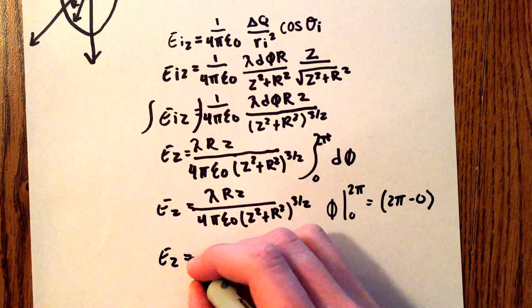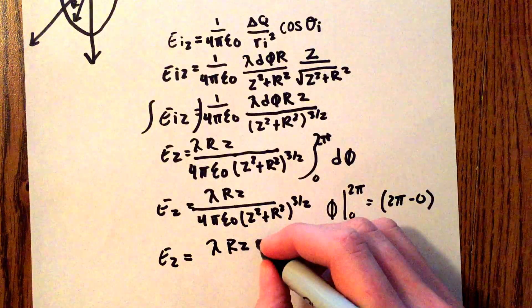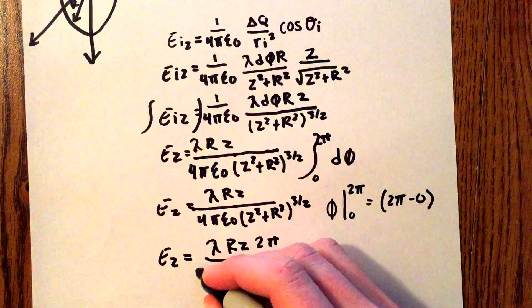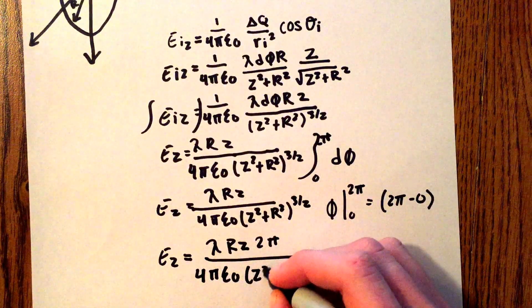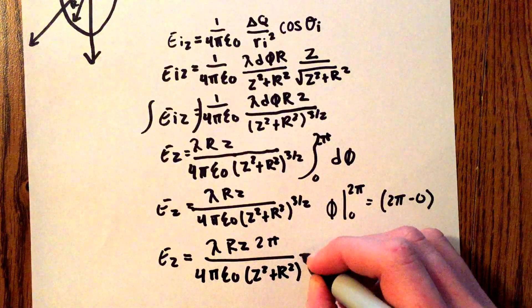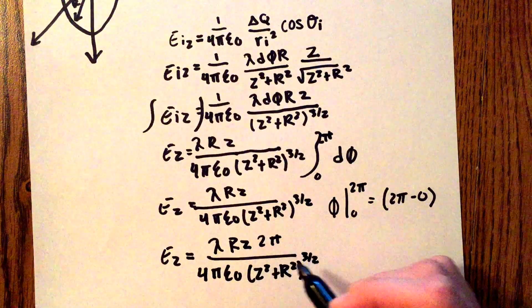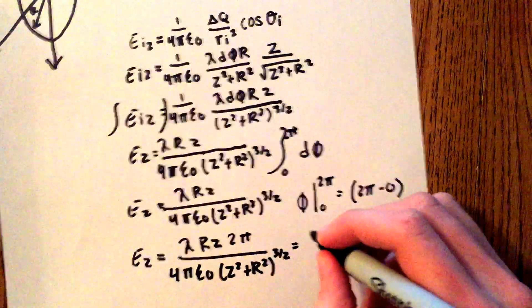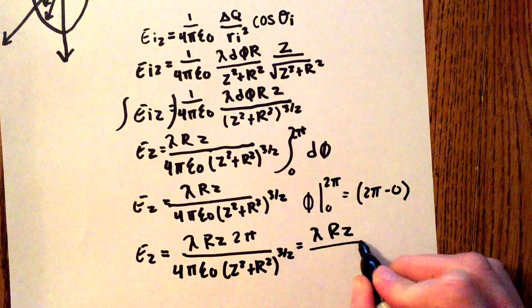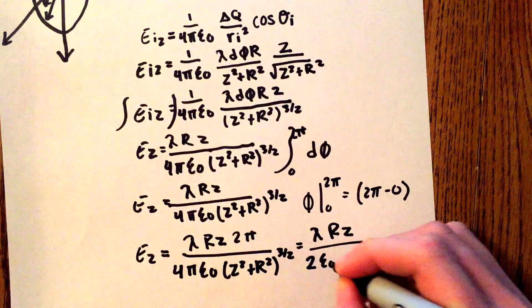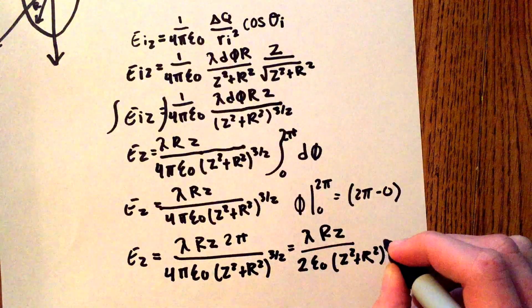So E_z is equal to lambda r z times 2 pi all over 4 pi epsilon naught times z squared plus r squared to the three-halves. We can do further simplification: the 2 pi and the 4 pi simplify, giving lambda r z all over 2 epsilon naught times z squared plus r squared to the three-halves.